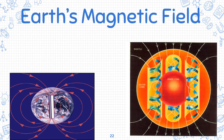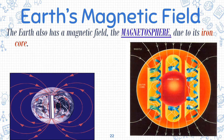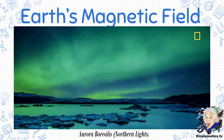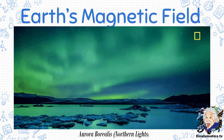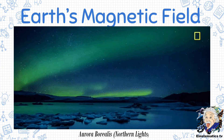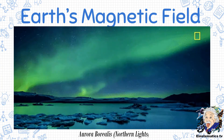It is also important to note that the Earth itself has its own magnetic field, called the magnetosphere, due to its iron core. Because of this, it allows compasses to work and also protects us from cosmic radiation. One evidence that the Earth has its own magnetic field is the presence of aurora borealis, also known as the northern lights.